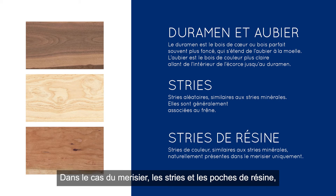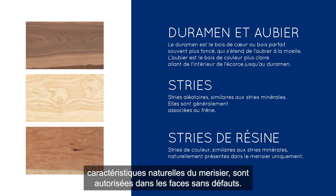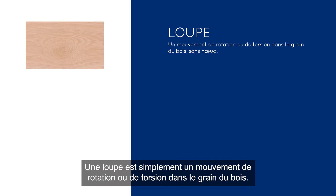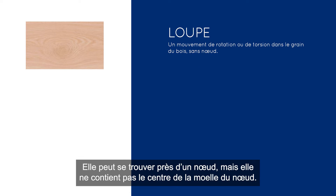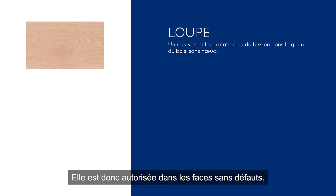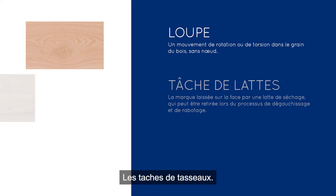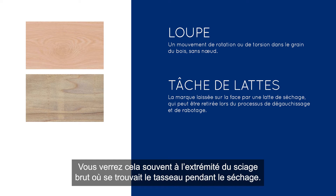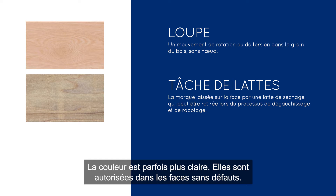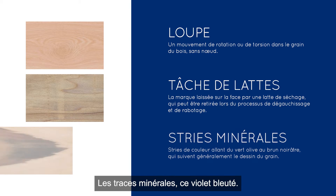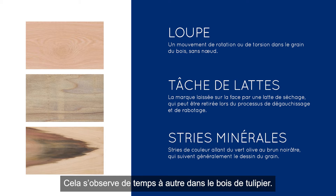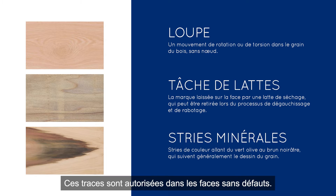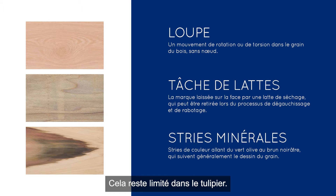In cherry, gum streaks and gum spots are allowed in clear cuttings — that's a natural characteristic of cherry. A burrow is simply a swirl or twist in the grain of wood, possibly near a knot, but it doesn't contain the pith center of the knot, so it's allowed in a clear-faced cutting. A sticker mark — where the sticker was when it dried, it might be lighter in color — is allowed. Mineral streaks, that bluish-purple you see in tulip wood on occasion, are also allowed in the clear cutting, though limited in tulip wood.